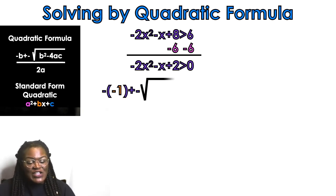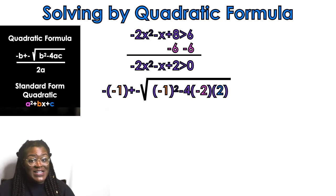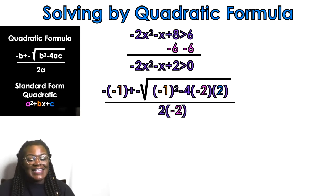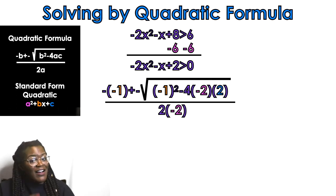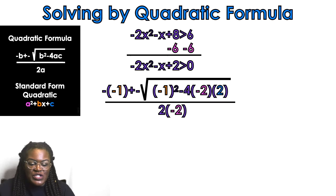So: negative B — negative negative 1 — plus or minus the square root of B squared, which means negative 1 squared, minus 4 times a (which is negative 2) times c (which is 2), all over 2a where a is negative 2. I color-coded it so there's no confusion.